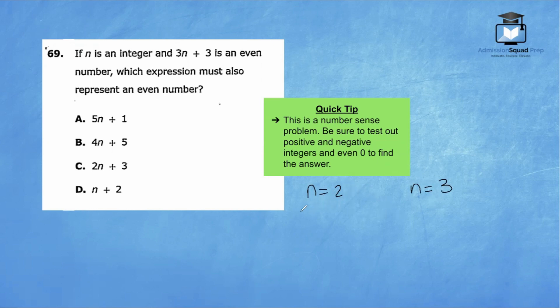If n was 2, then 3 times 2 plus 3 would be 9. 3 times 2 is 6, 6 plus 3 is 9. So notice when n was an even number, the outcome was odd. And that is incorrect because the problem explicitly states that 3n plus 3 is even. So we know that n has to be an odd number.